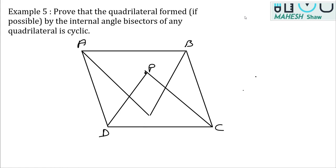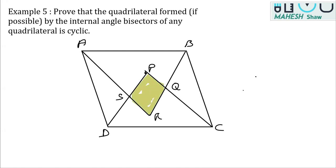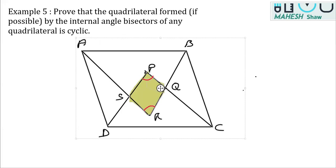Let's name the intersection points as P, Q, R, and S. Now we have to prove that quadrilateral PQRS, formed by the bisectors of the interior angles, is cyclic. To prove a quadrilateral is cyclic, we prove any two pairs of opposite angles are supplementary — for example, angle P plus angle R equals 180 degrees. We'll use the angle sum property for this.